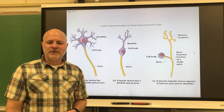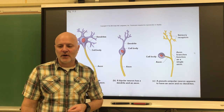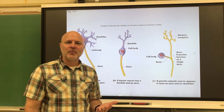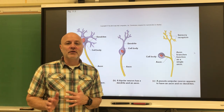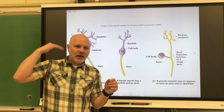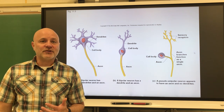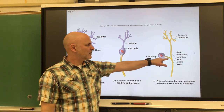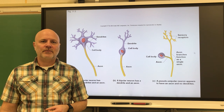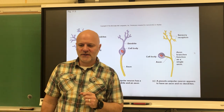Let's look at functional differences. Sensory neurons are nerve cells that conduct impulses from a peripheral body part to the central nervous system — from the body out to the brain and spinal cord. These are unipolar, and their cell bodies are found within ganglia, outside of the central nervous system.